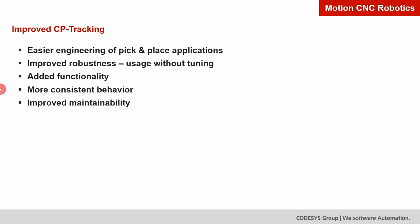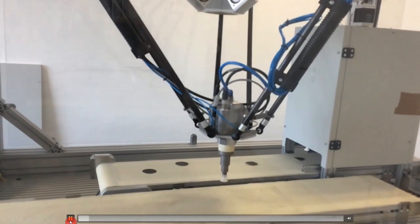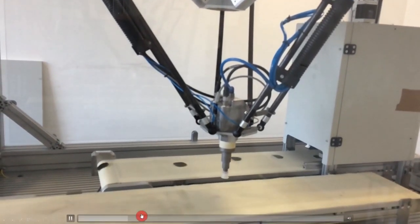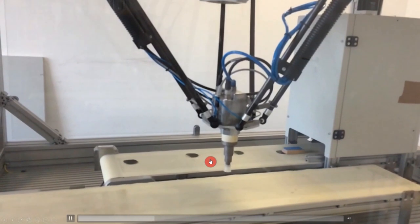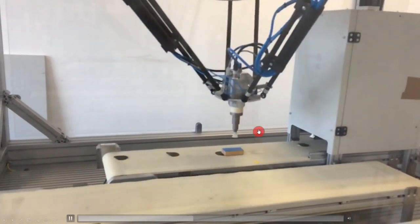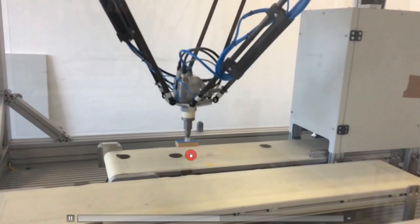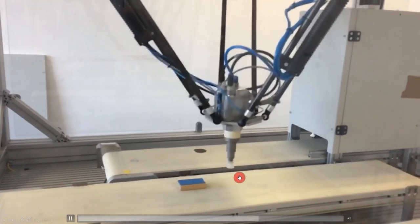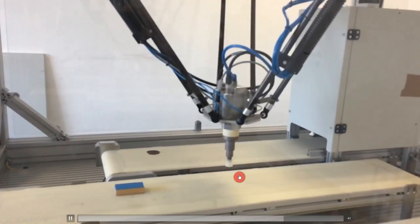To give you an idea of what you can accomplish with this, let's see our test machine. This is ultra slow motion — you see the robot synchronizes with the belt, picks a brick, and places it on another belt in a very smooth movement.